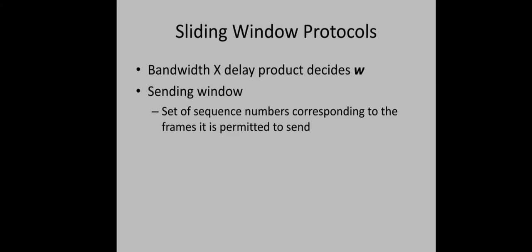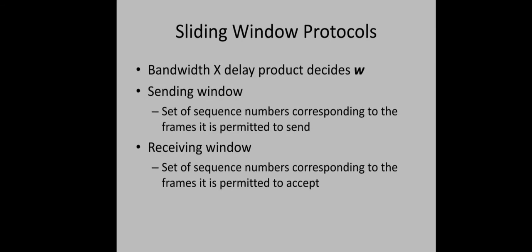The first category is frames already sent but not yet acknowledged — these are kept buffered because if the frame is not received correctly at the receiver, the sender may have to retransmit it. The second category is frames which are ready to be sent. At the receiver side, it keeps a set of sequence numbers corresponding to frames it is permitted to accept. When a new frame is received, the receiver checks whether it falls within the receiving window; only if it does is the frame accepted, otherwise it is rejected. This is one way of ensuring flow control.